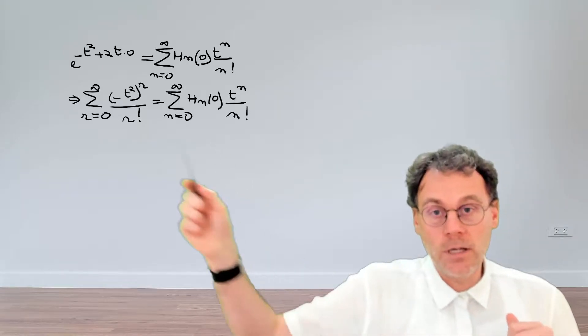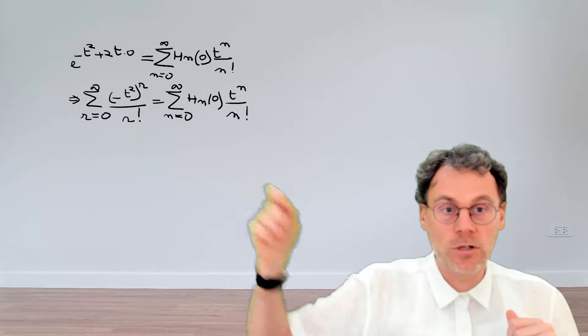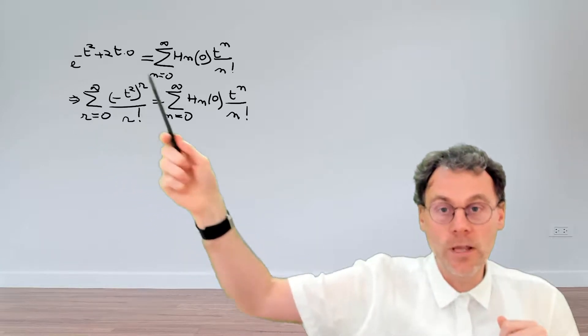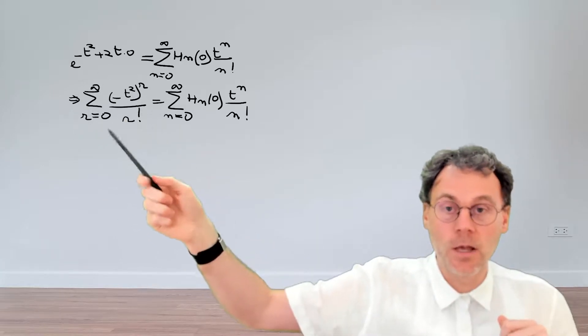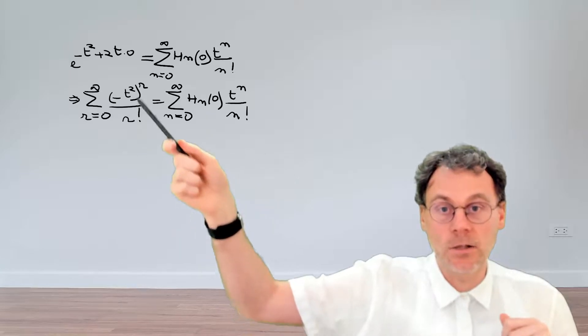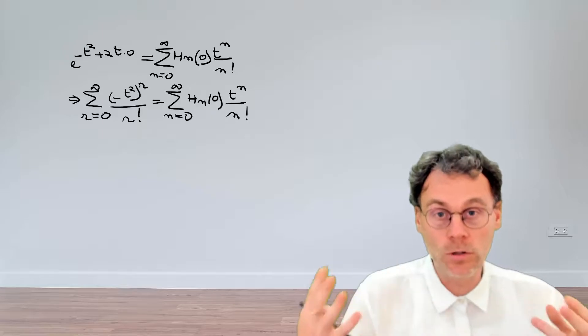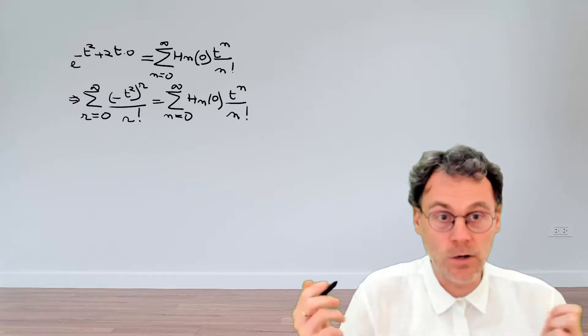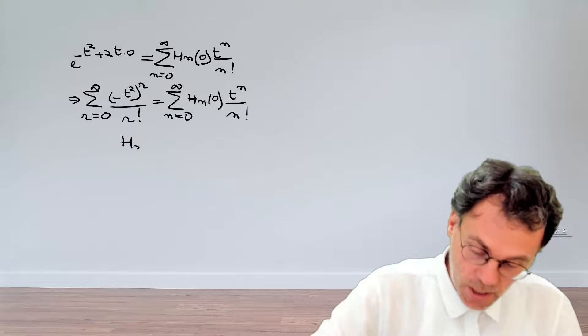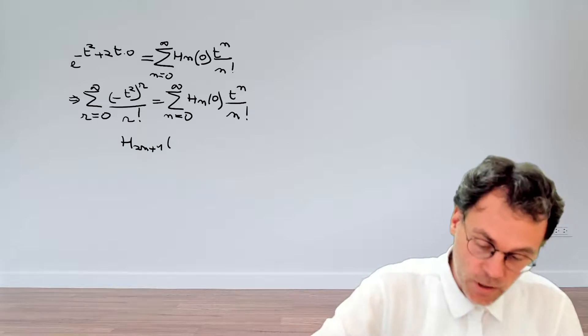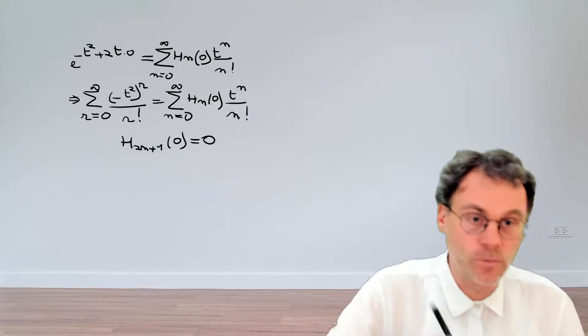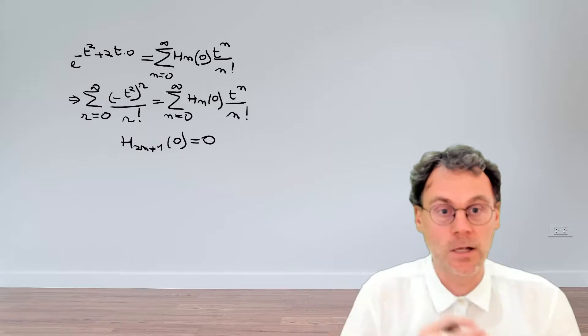Now, if you carefully consider these two series expansions, it's obvious that on the left-hand side, we only have even powers of t. So that automatically means that on the right-hand side, all the coefficients corresponding to odd powers of t should be 0. So already here, we can conclude that H(2n+1) at the origin should be 0. Otherwise, we get an inconsistency.